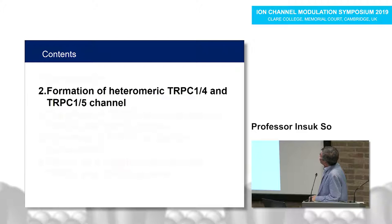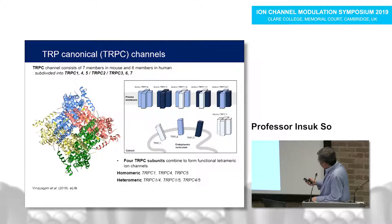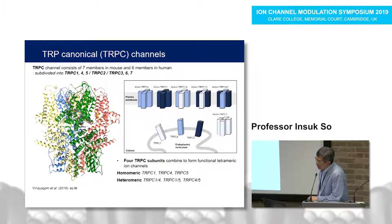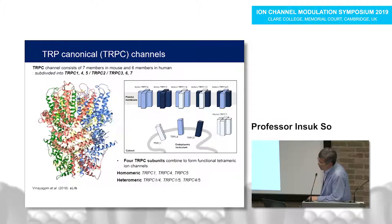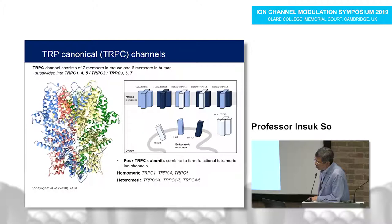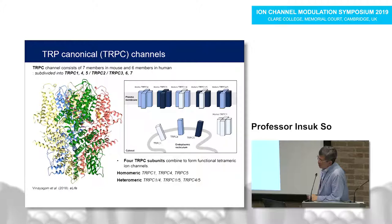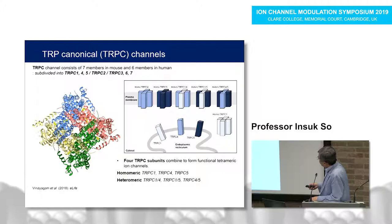I'll present the binding region for formation of heteromeric TRPC1/4 and TRPC1/5 channels. Four subunits make a functional TRPC channel, so there would be three kinds of homomeric channels: TRPC1, TRPC4, and TRPC5. In case of heteromeric channels, we are not sure of the combination of TRPC1/4/5 channels. Many researchers suggest there would be TRPC1/4, TRPC1/5, and in some cases TRPC4/5 heteromers.